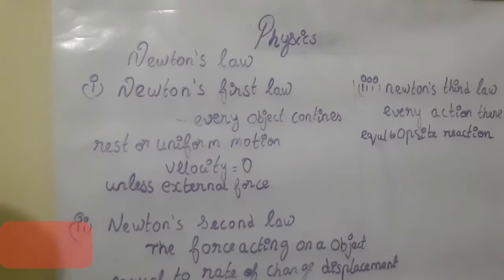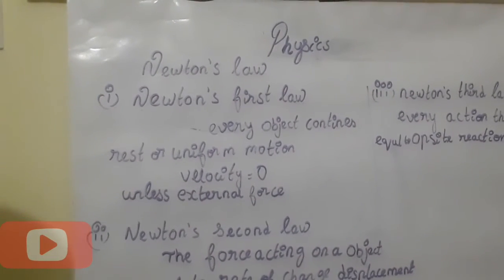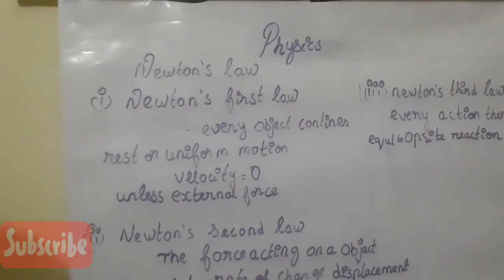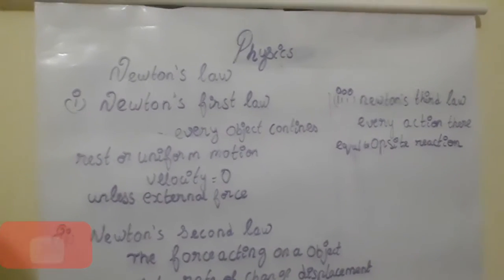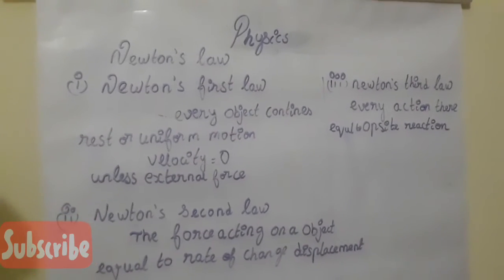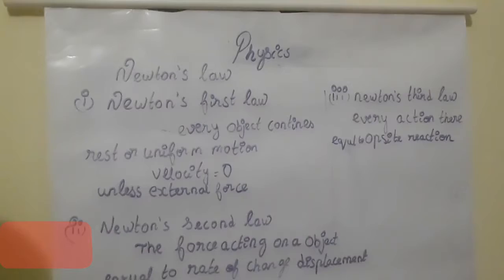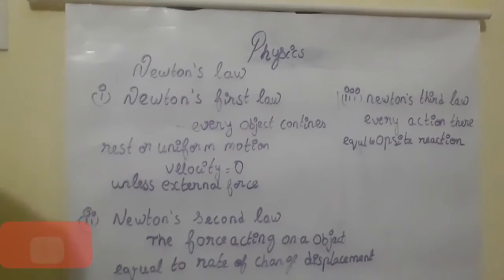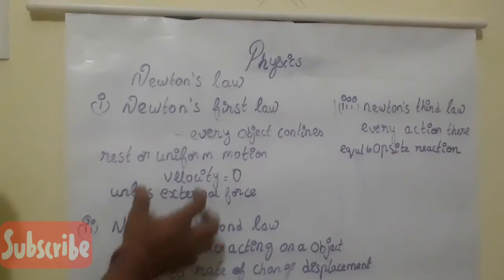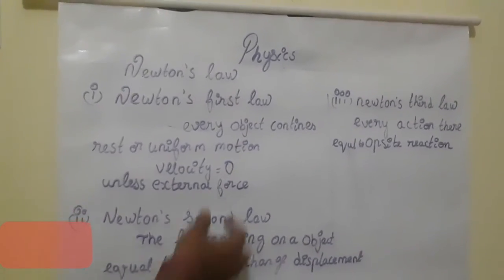Newton's first law: every body or object continues in rest or uniform motion. For example, we have a bus moving at uniform motion — that means it has a constant velocity, meaning the external force is zero.